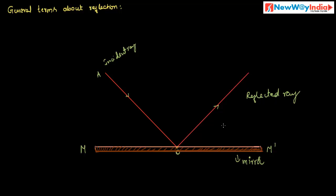What is normal? A perpendicular drawn at the point of incidence on the surface of mirror is called normal. AO is the incident ray, OB is the reflected ray, and ON is the normal.